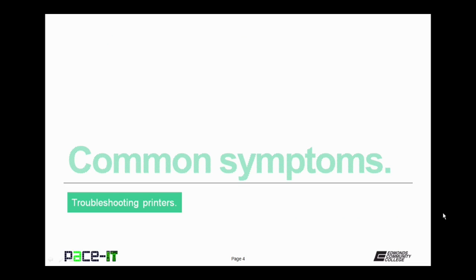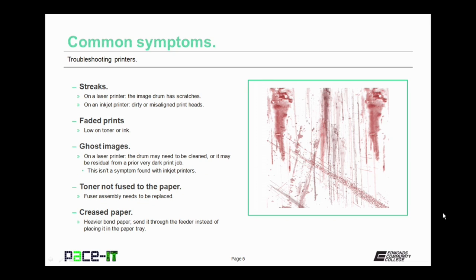We begin by talking about common symptoms. If your print jobs are coming out with streaks, on a laser printer it's usually a problem with the imaging drum — it has scratches. On an inkjet, you either have dirty or misaligned print heads.